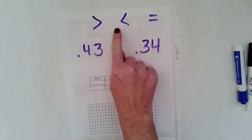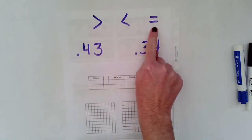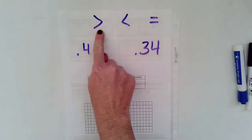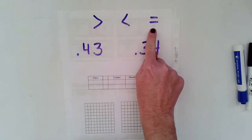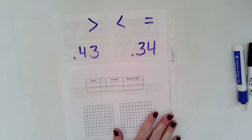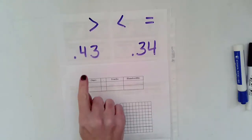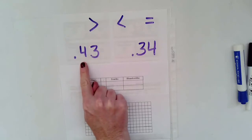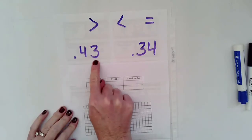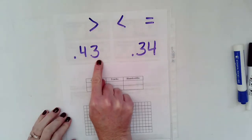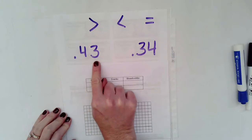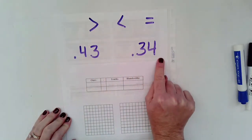So remember, these are the symbols that we use to compare numbers. We have greater than, less than, and equal to. We'll be using those today to help us compare these decimals. So let's take a look at our first decimals we have. The first ones here, and this is how you read it and say it, is 43 hundredths. I say 43 hundredths because that 3 ends in the hundredths place. So 43 hundredths and 34 hundredths.